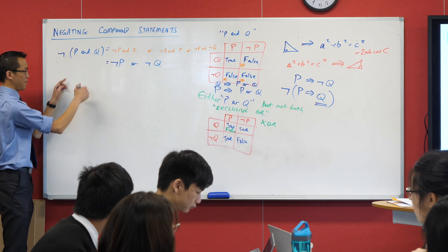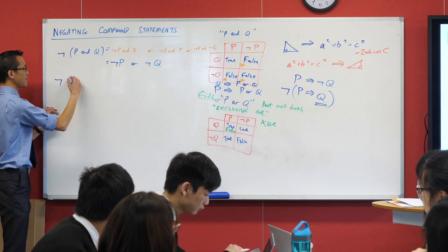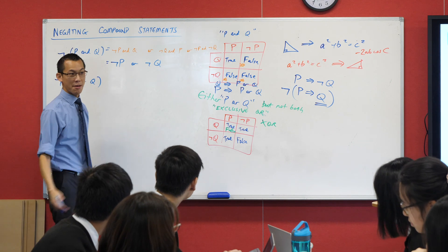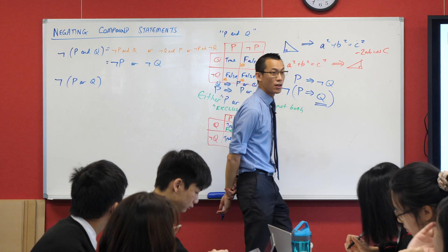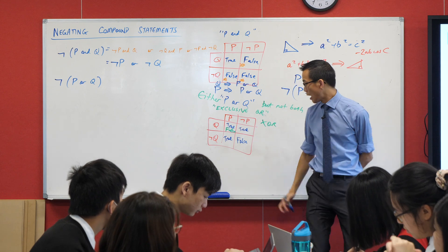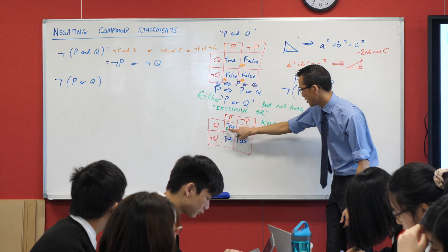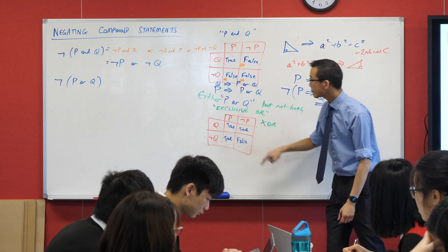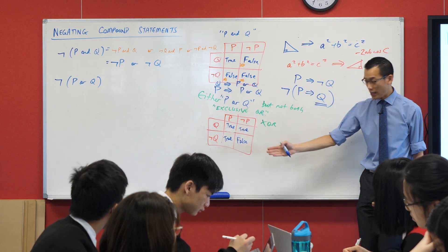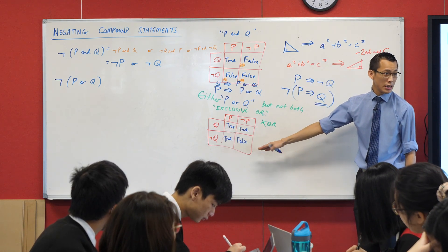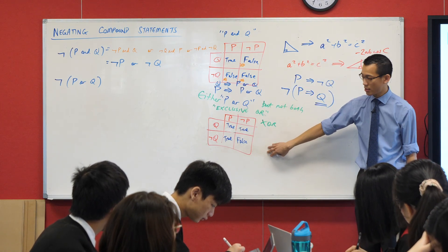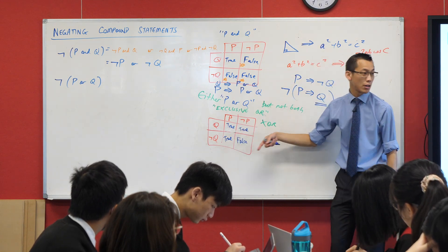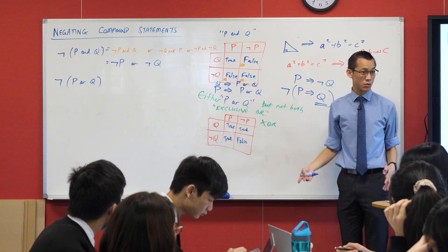I've got a negation for the AND statement. Now I want a negation for the OR statement — and maybe you're a couple of steps ahead of me already. I'm looking at this truth table down here. Here is P or Q. To negate this, I'm going to flip everything — everything that was true before becomes false, everything that's false becomes true.